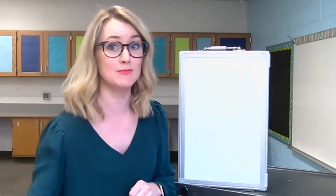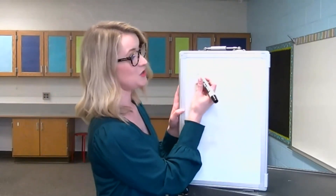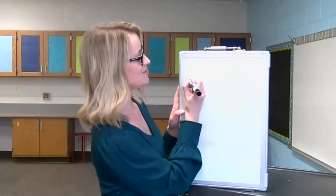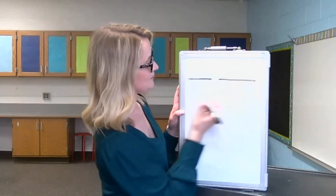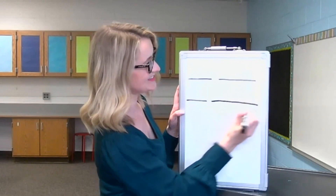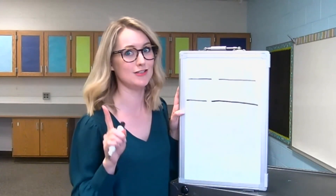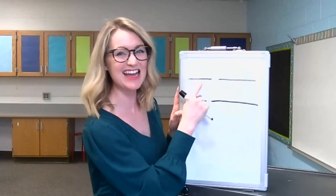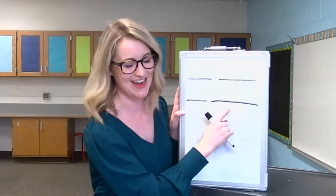There are four words in that sentence. Before I start writing, I like to draw lines on my paper to remind me that there are spaces between my words. You can draw lines too if you would like. The boy is sleeping. We're going to read our sentence one time before we start writing. Read it with me — ready? The boy is sleeping. Now we're ready to write.